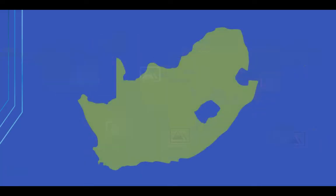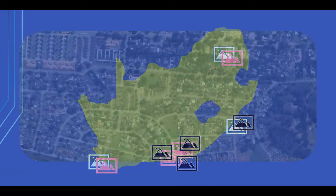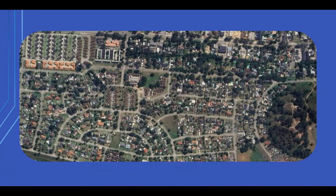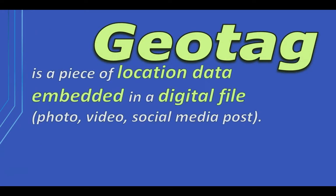Then you zoom in and see the photos that you took in the different parts of the country, and then you zoom in even further and see the photos that were taken from the different parts of your own city or town. Now this is possible because of something called a geotag.